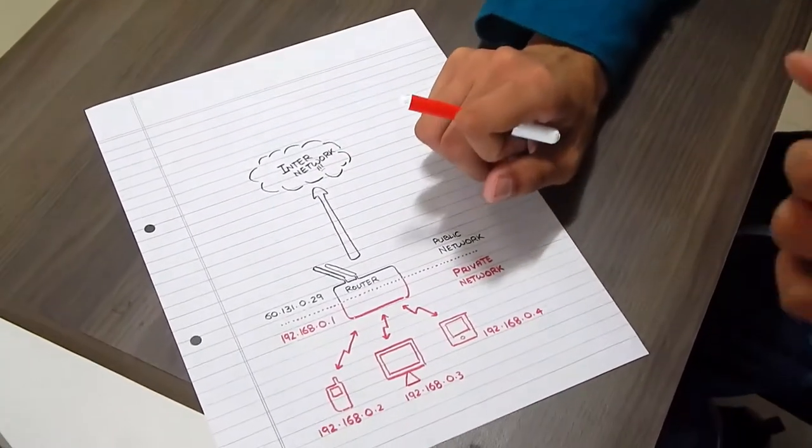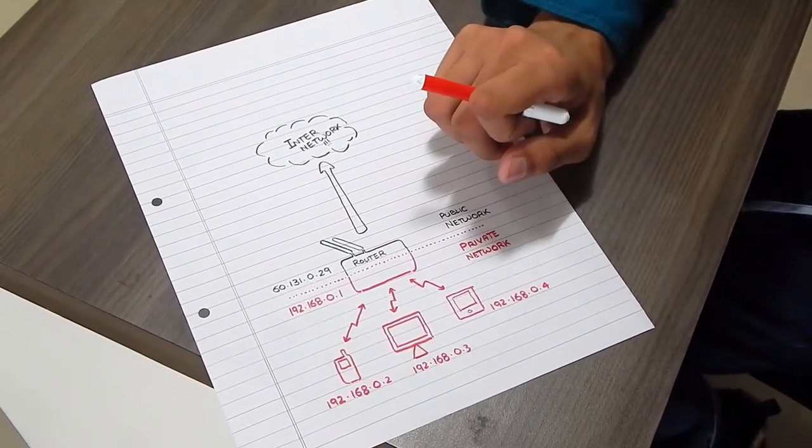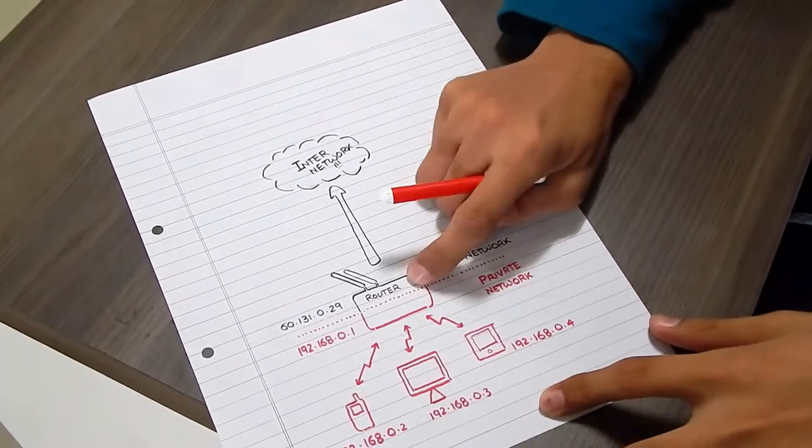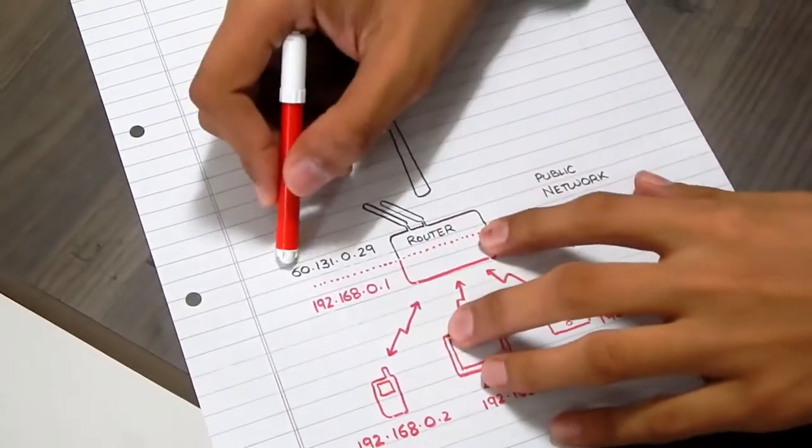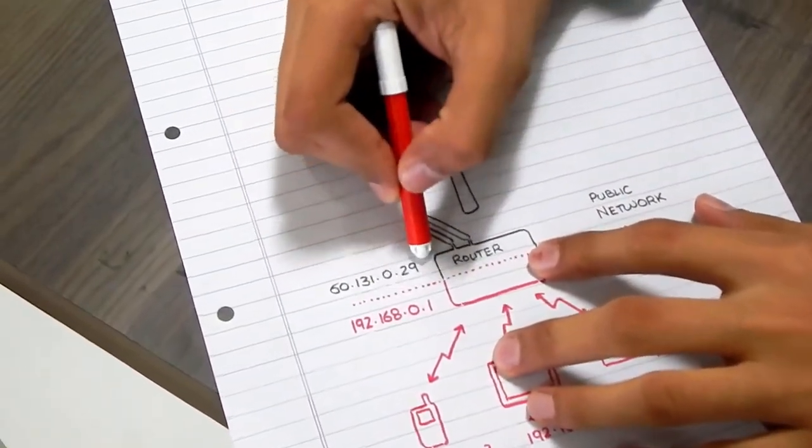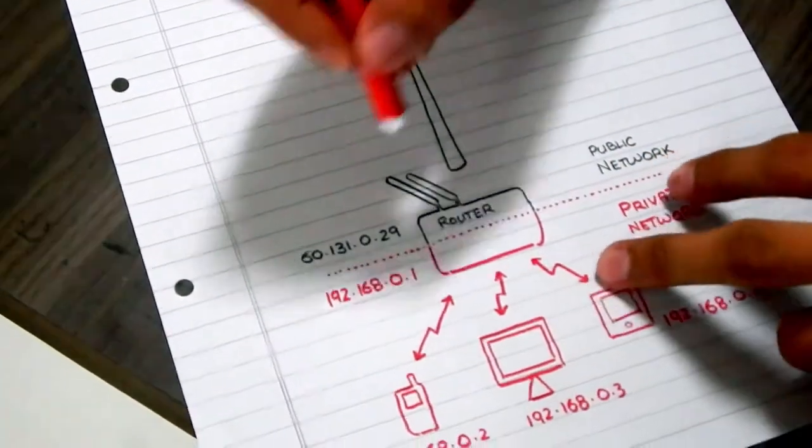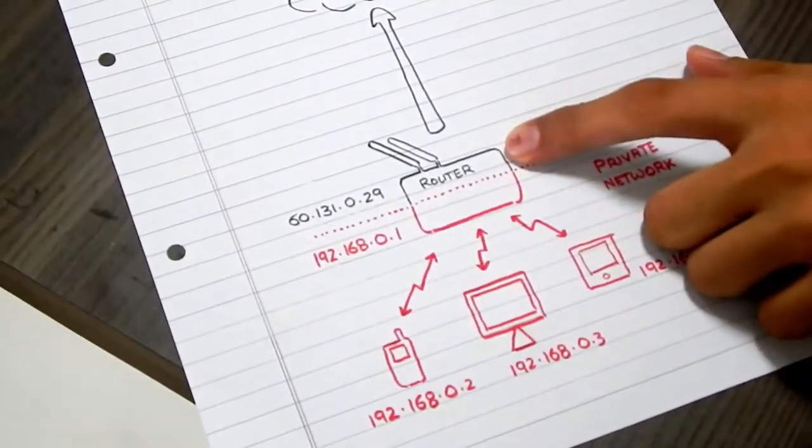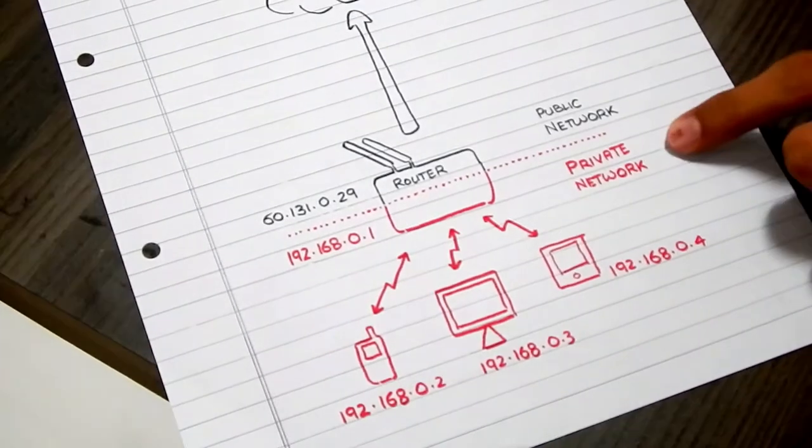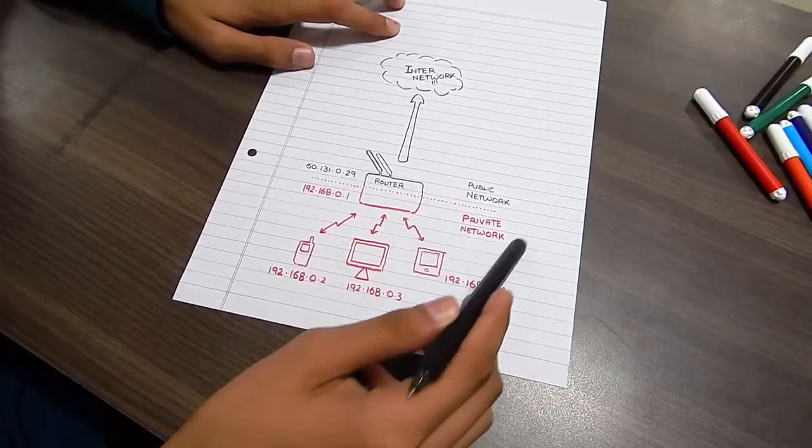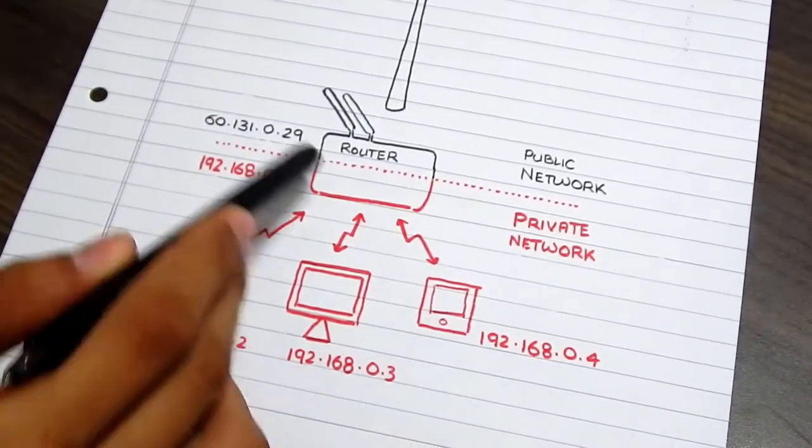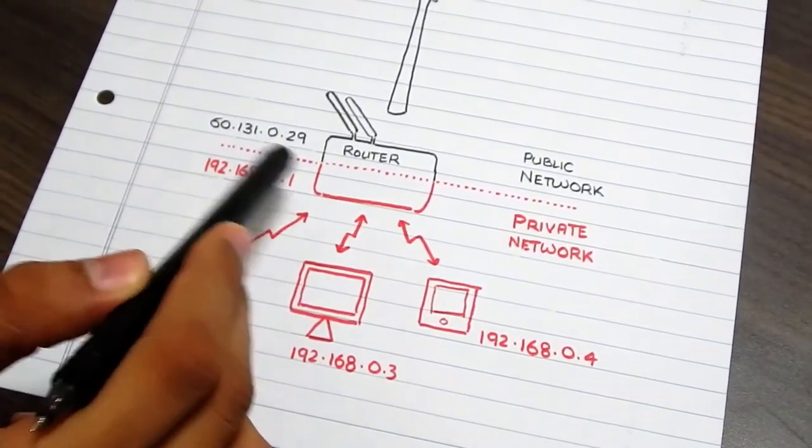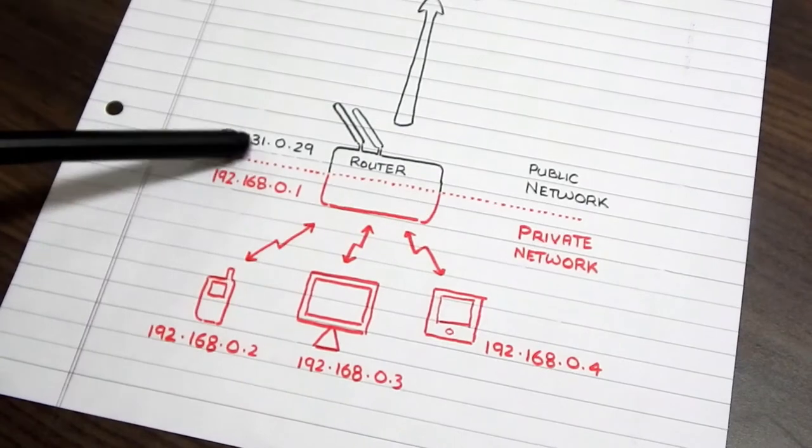One way of doing this is NATing, Network Address Translation. How this works is, your router gets one IP address from your ISP. This might be something like this. It does not have to be this, but it could be something like this. And then, the router itself connects all the devices using a private network. Private network of its own, in which all the devices get connected. They don't have the IP address from the ISP. Only the router has the IP address from the ISP.